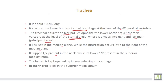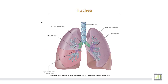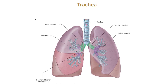The trachea lies in the median plane, while the bifurcation occurs slightly to the right of the median plane. The upper half of the trachea is present in the neck, while the lower half is present in the mediastinum. The lumen of the trachea is kept open by incomplete tracheal rings. In the thorax, it lies in the superior mediastinum, bifurcating at the sternal angle or lower border of the fourth thoracic vertebra into two main bronchi.